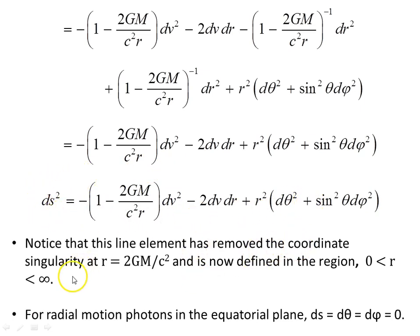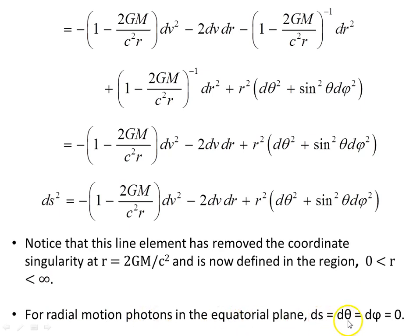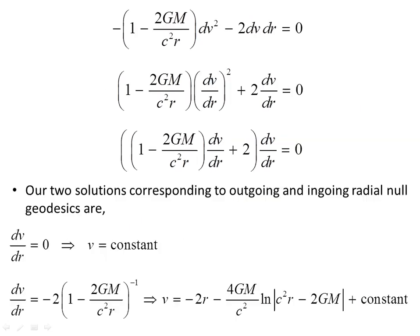Notice this line element has removed the coordinate singularity at the Schwarzschild radius r equals 2GM on c squared, and is now defined in the region between r equals 0 and infinity. For radial motion of photons in the equatorial plane, we set dθ and dφ to 0, and for photons ds is also 0, giving us this object here.